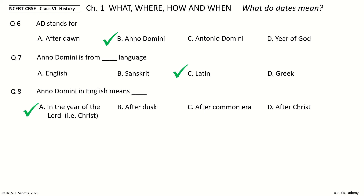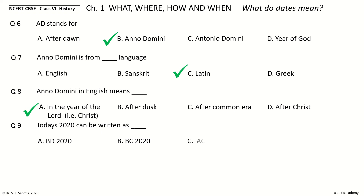Question 9. Today's 2020 can be written as dash. Your options: BD 2020, BC 2020, AC 2020, AD 2020. And the answer is AD 2020.